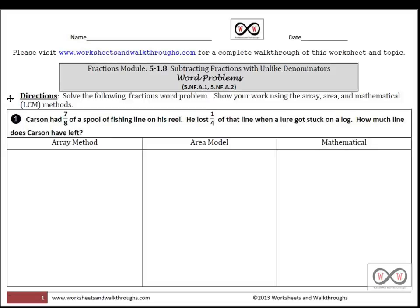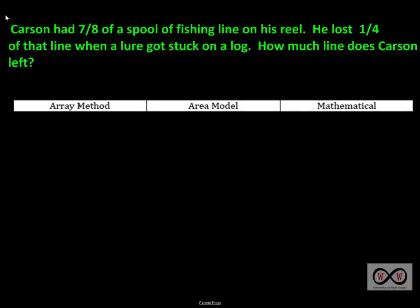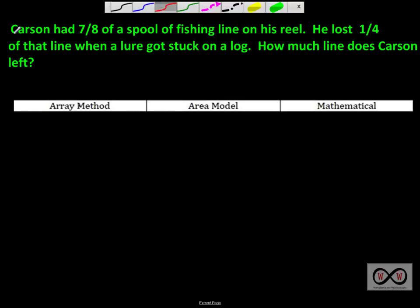We have directions: solve the following fractions word problem, show your work using the area model and mathematical or LCM methods. Let's take a look at this problem. We'll go through sentence by sentence to tease out the math clues. Carson had seven-eighths of a spool of fishing line on his reel. He lost one-fourth of that line when a lure got stuck in a log. How much line does Carson have left? Right off the bat — Carson had seven-eighths of a spool of fishing line.